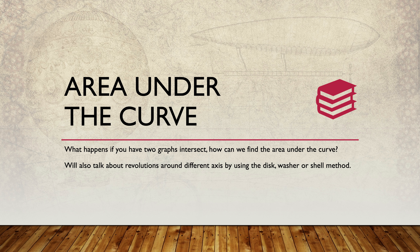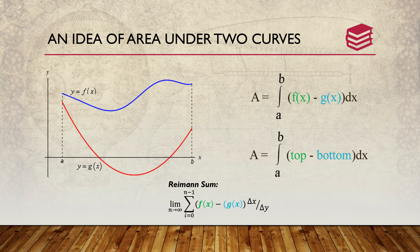In this section we're going to be talking about the area underneath the curve. What happens if two graphs intersect with one another, and how do we determine the area underneath the curve? We will be talking about different revolutions around the axes by using the disk, washer, or shell methods. The idea is where you have two equations, f(x) and g(x), and you take the top equation minus the bottom equation and set up an integral from left to right.